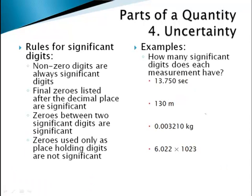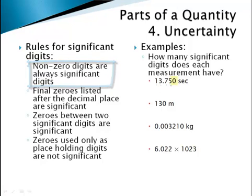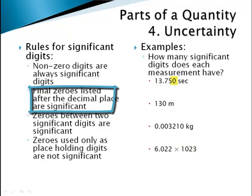An important skill is being able to identify how much precision is implied in a number given to you. There are several rules for significant digits. Let's look at four different values and determine how many significant digits each has. The first measurement, 13.750 seconds, has five significant digits. The first four are significant because any non-zero number is always significant. The trailing zero is also significant because it's a final zero written after the decimal place — somebody put it there on purpose. They could have written 13.75, but they wrote 13.750, making that zero a measured digit.